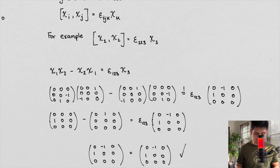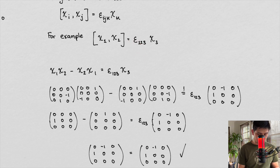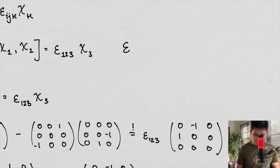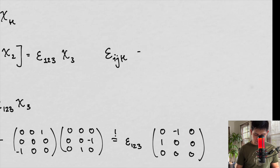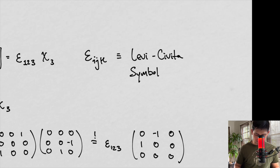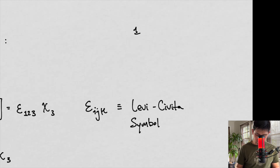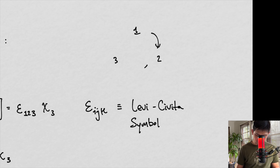Let's see how this works. We're going to take an example: chi1 and chi2. We're going to see that it's going to equal this epsilon. This is our Levi-Civita symbol. Epsilon i, j, k is called the Levi-Civita symbol. How this works — if you're not familiar — is that it takes a set of i, j, and k numbers.